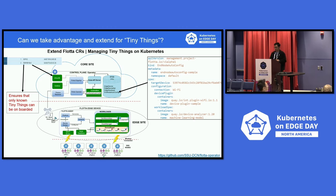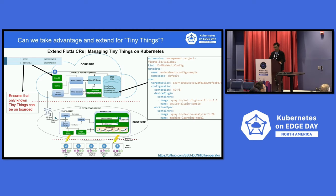For connection establishment from tiny things to the edge side, specific connection settings are defined in the device plugin configuration. Once configured, the edge workload is automatically deployed to that tiny thing.